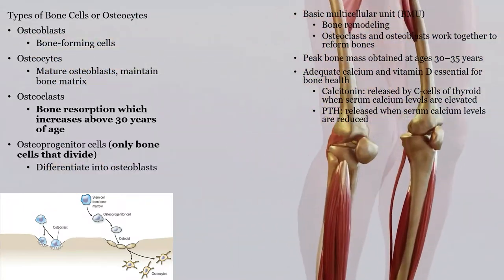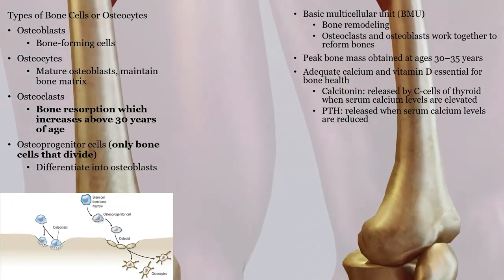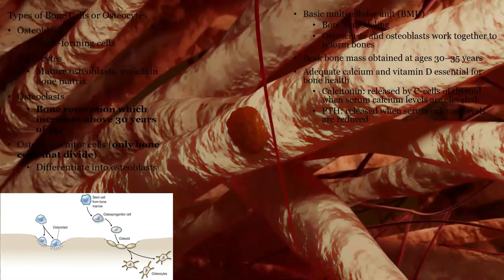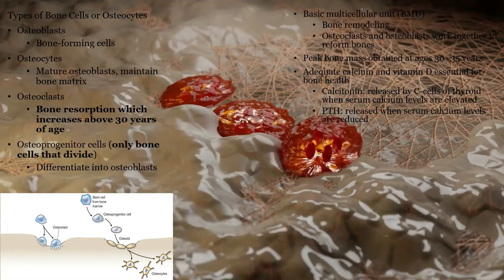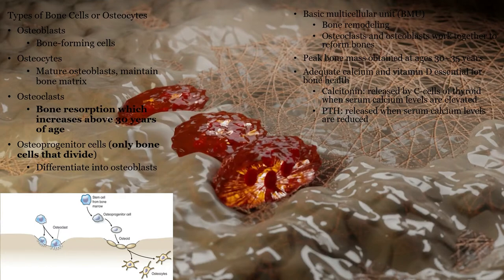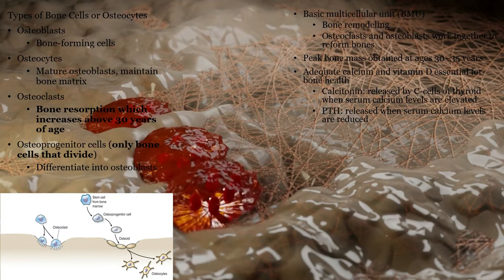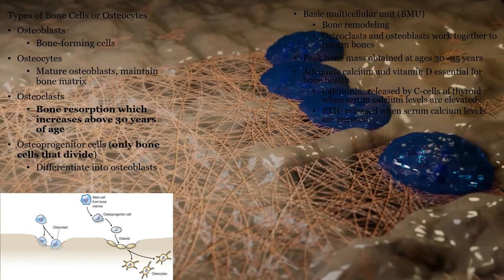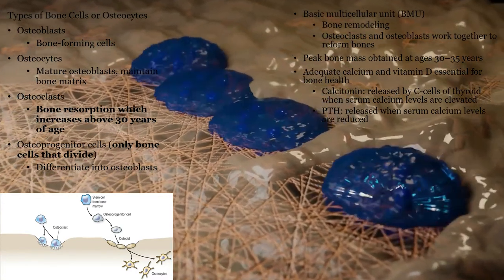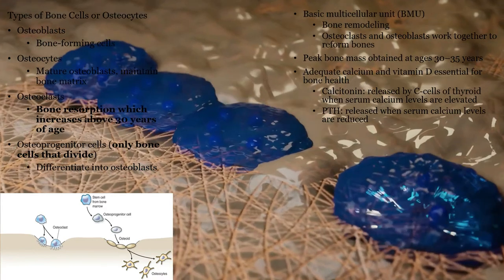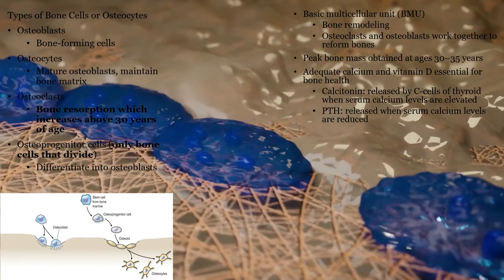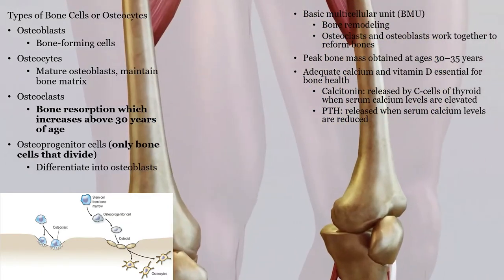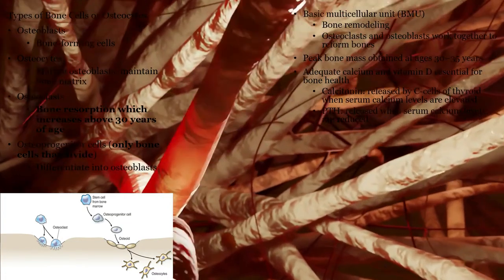Your bones are living, breathing tissue that is constantly reforming. The bones store calcium for us, as well as phosphorus. Calcitonin from the thyroid gland will help build bone, while parathyroid hormone from the parathyroid gland helps break down bone. Therefore, calcitonin is used when calcium levels are too high or in hypercalcemia, while PTH is used when calcium levels are too low or hypocalcemia, making a homeostatic negative feedback mechanism to regulate serum calcium.